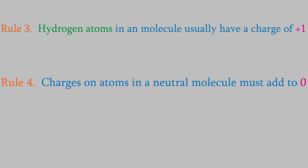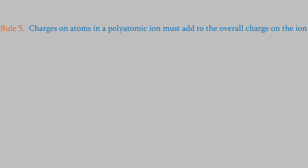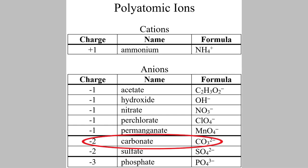The fourth rule is that the charges on the atoms in a neutral molecule should add up to zero. You actually already know about that rule — we've used it many times to figure out the formulas of molecules. For example, the reason magnesium chloride has the formula MgCl2 is because the charges on the atoms must add up to zero. Since magnesium has a charge of plus two and chlorine is minus one, we need two chlorines to make the charges cancel out. The fifth and final rule is that in a polyatomic ion, the charges must add to give the overall charge of the ion. So, for example, one of the polyatomic ions you know about is carbonate, which has a charge of minus two. So what are the charges on each atom in this ion?